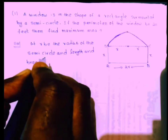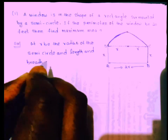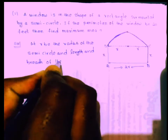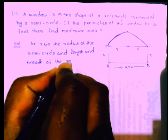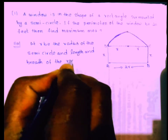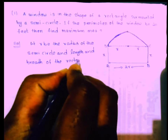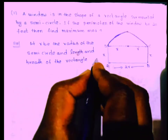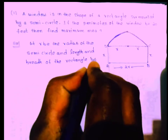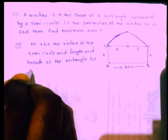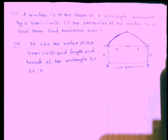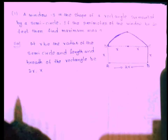The length and breadth of the rectangle: the length is 2R and the breadth is X.